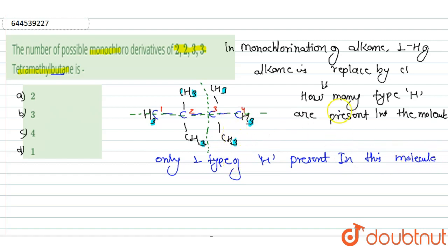So only one product is formed on the monochloro derivative of this compound. So the correct answer is option D. Thank you.